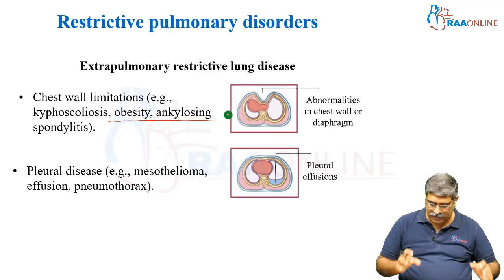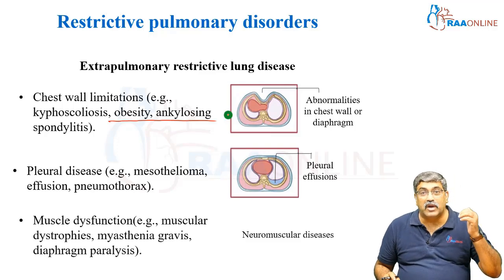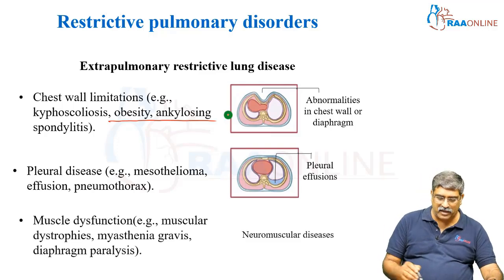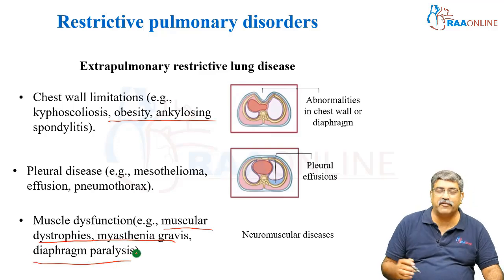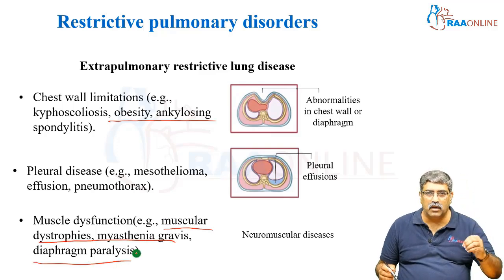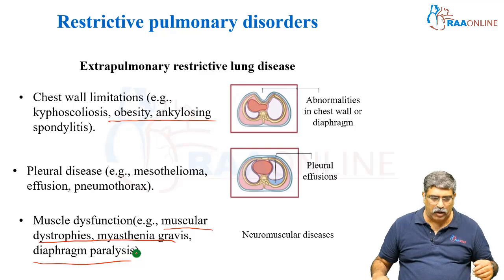Again, the lung cannot expand. You can also have neuromuscular disease like muscular dystrophy, myasthenia gravis, and diaphragmatic paralysis, where again the lung capacity is reduced.